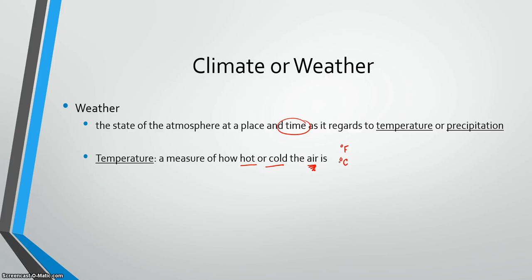When we look at the next thing, precipitation, we're looking at the water that falls to the ground as rain, snow, sleet, or hail.